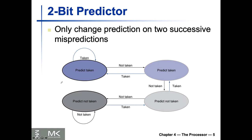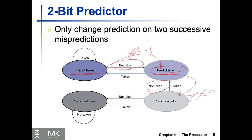With two mispredictions, starting from 'predict taken': first misprediction — it was not taken, so we stay in 'predict taken' but weakly. Second misprediction — another not-taken — and now we are on the flip side, in the 'predict not taken' state. If the next input is taken, we go straight back to 'predict taken'. Always make sure that the last two consecutive mispredictions will decide the switch.